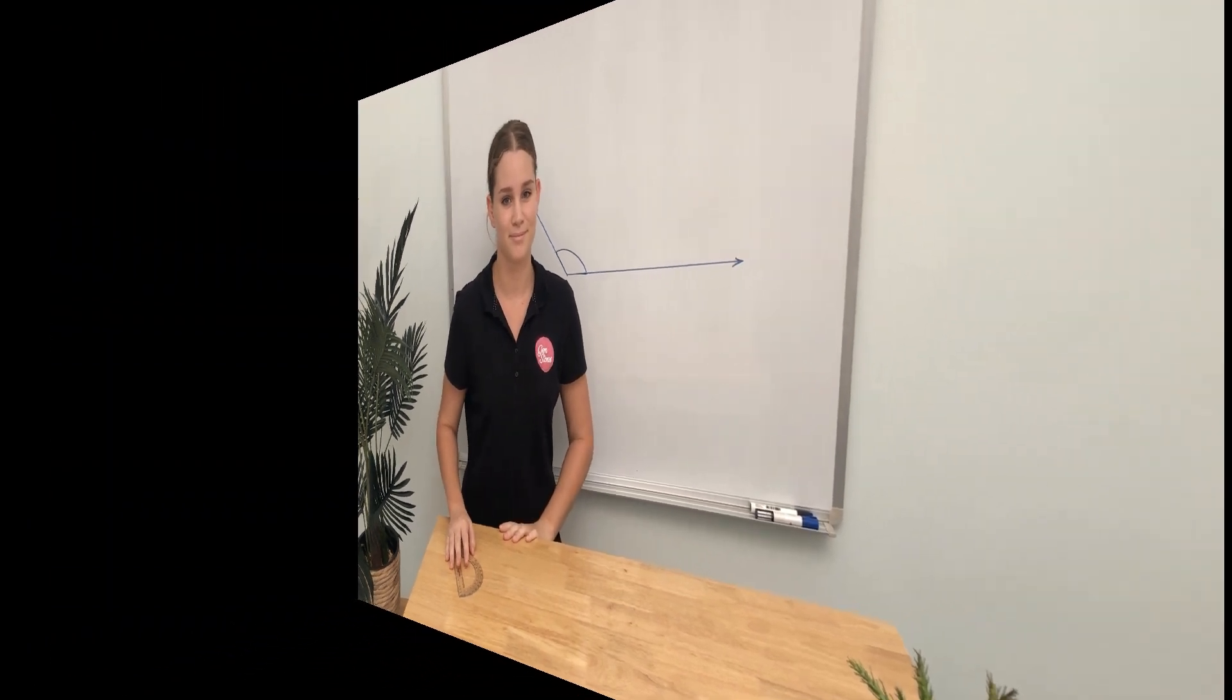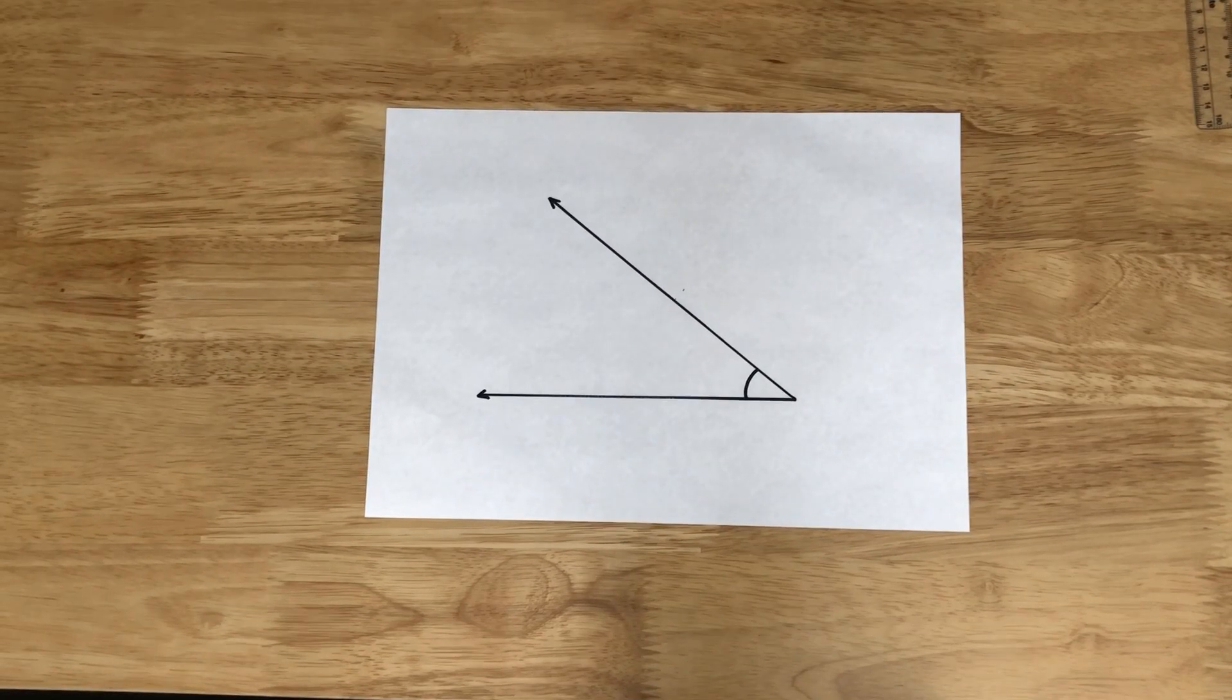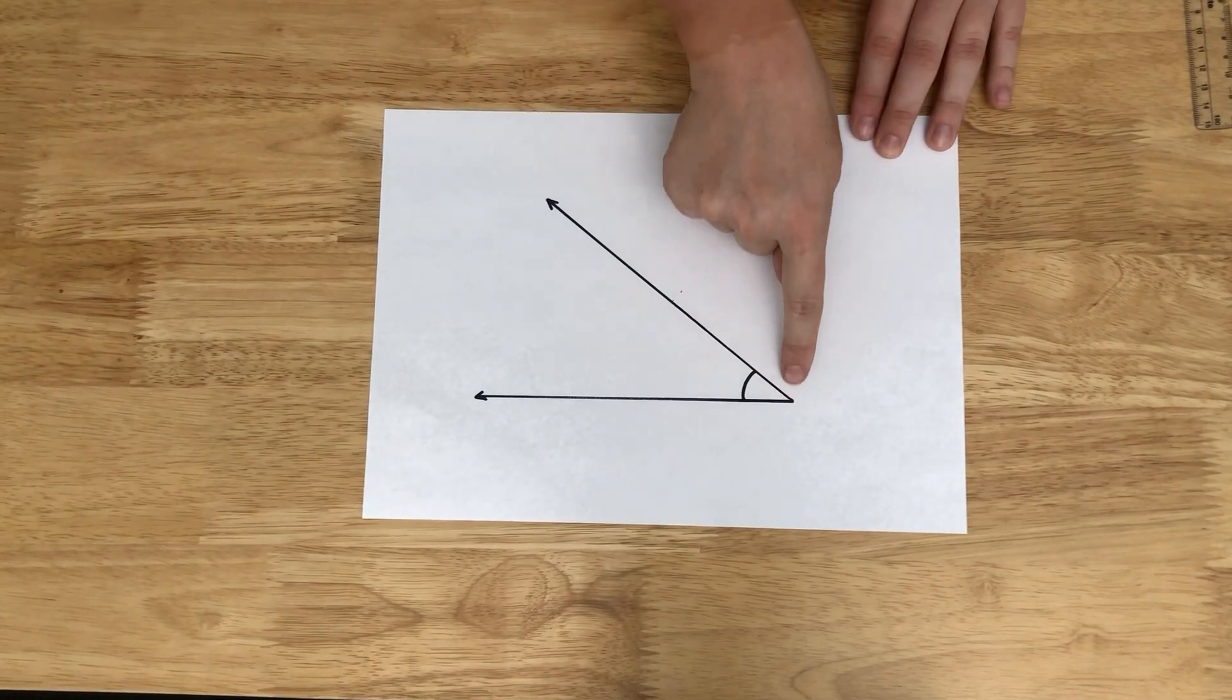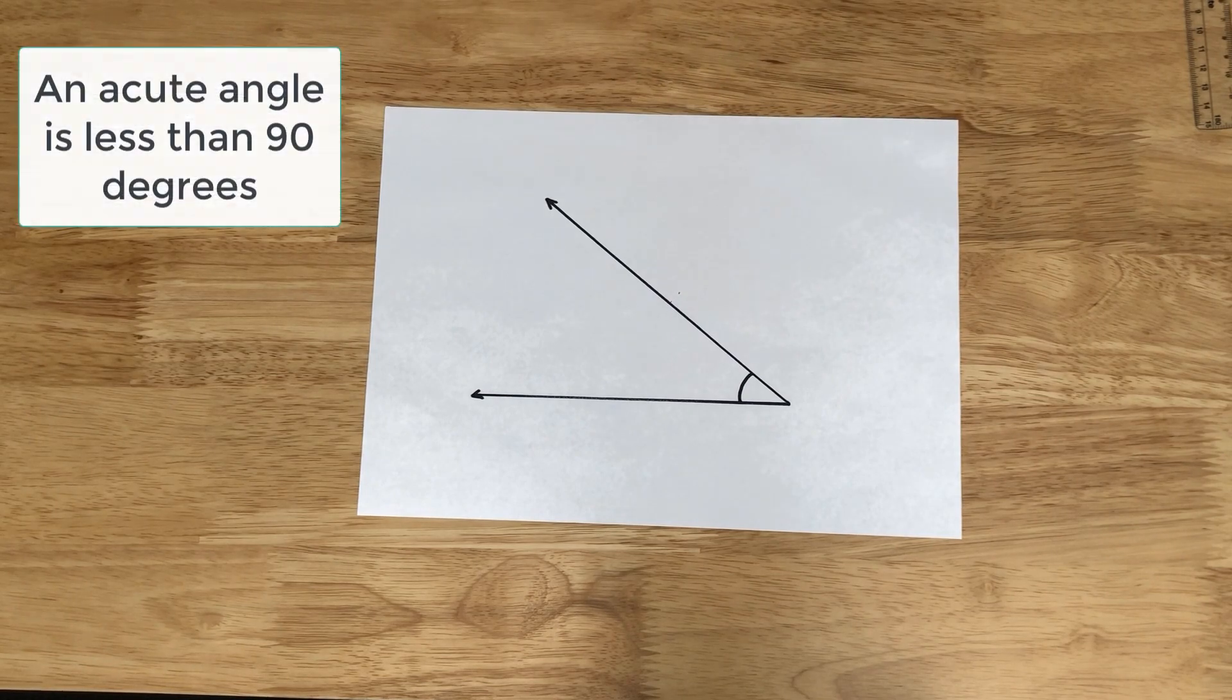Let's try some. Here we have an angle. We know it must be less than 90 degrees because the right angle would be over here, so it's definitely an acute angle.